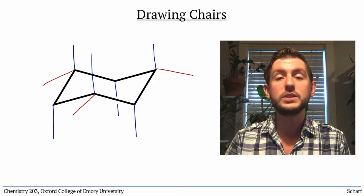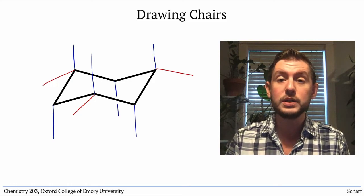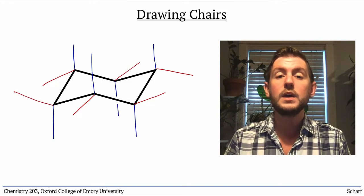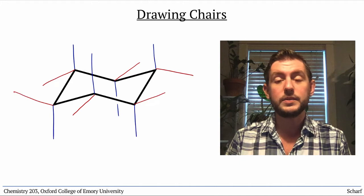And wherever we have an axial substituent pointing down, the other group is equatorial and angling upward, like this. There are a few things to note about this drawing.